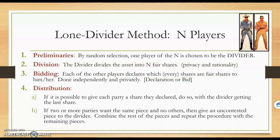A specific method we can use is the Lone Divider Method, used when we have n players. First, one person is randomly chosen as the divider to divide the assets into n shares. Then each of the other players independently and privately declares which shares are fair to them — this is called bidding. We then give each party a fair share if possible. If two or more parties want the same piece and no others, we give an uncontested piece to the divider, combine the remaining pieces, and repeat the procedure.